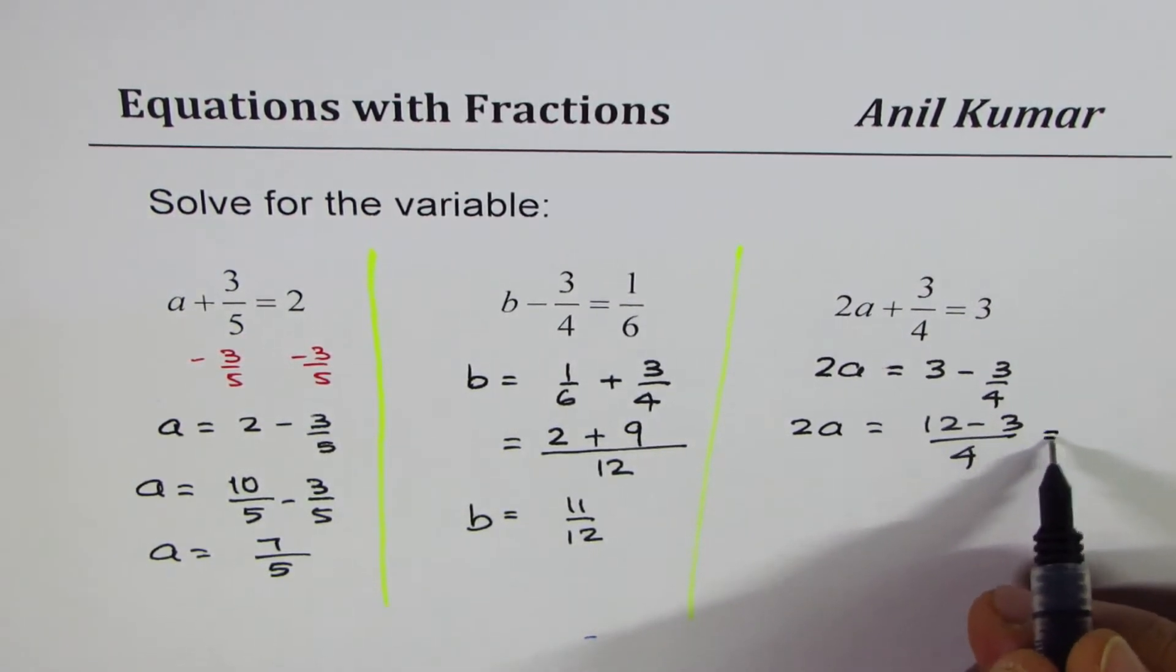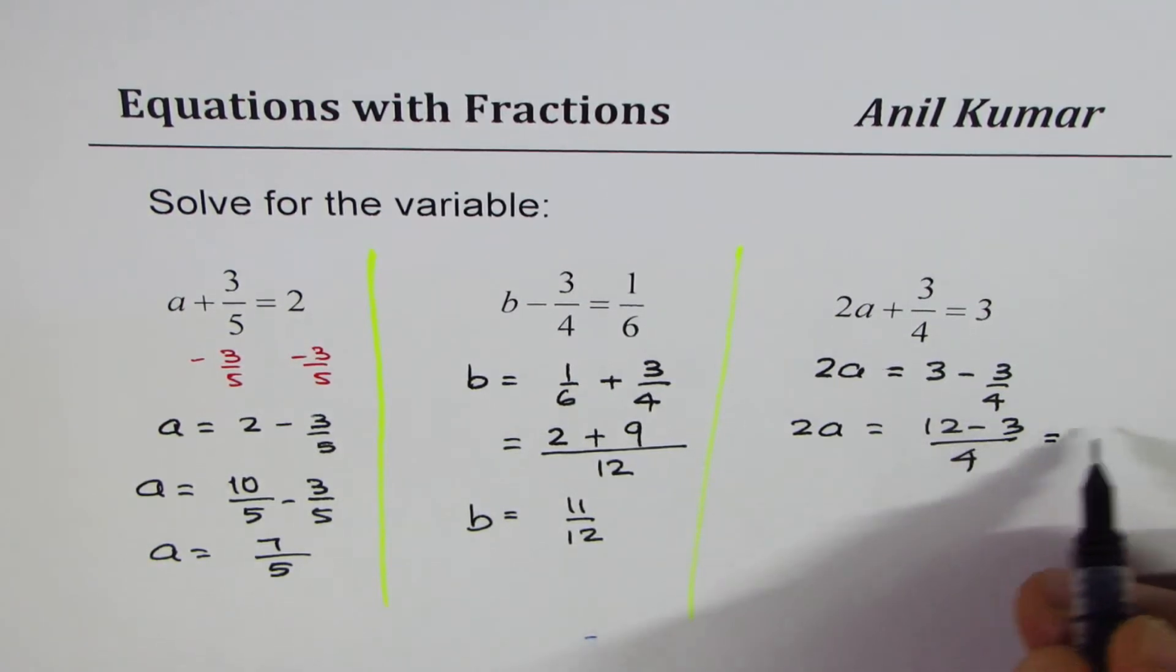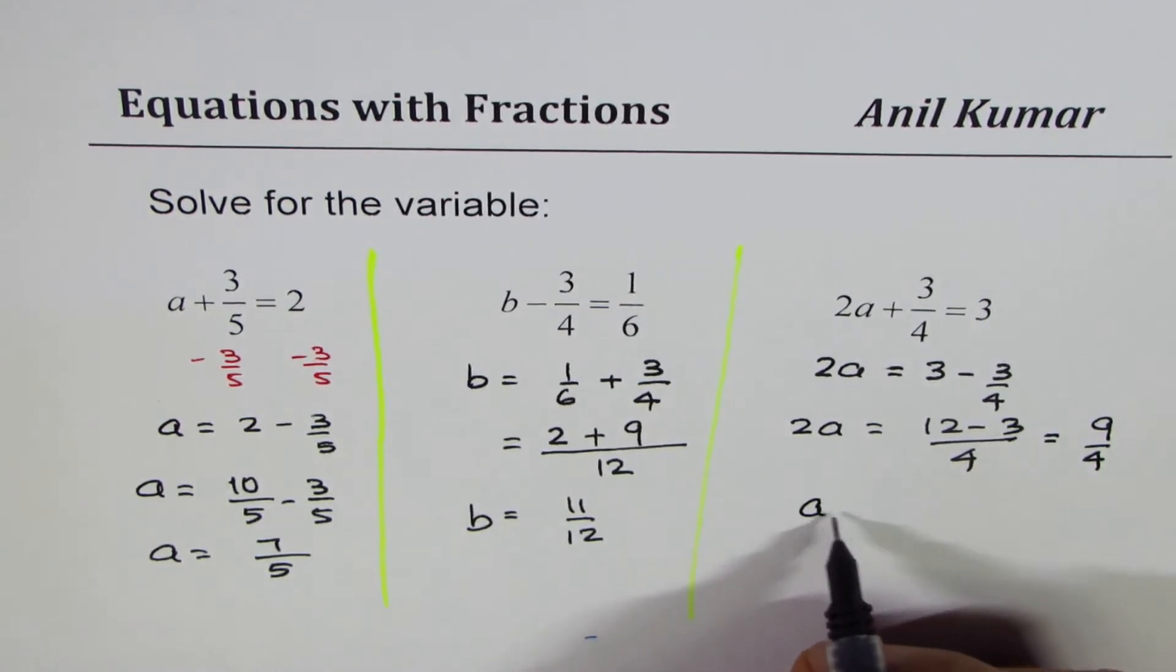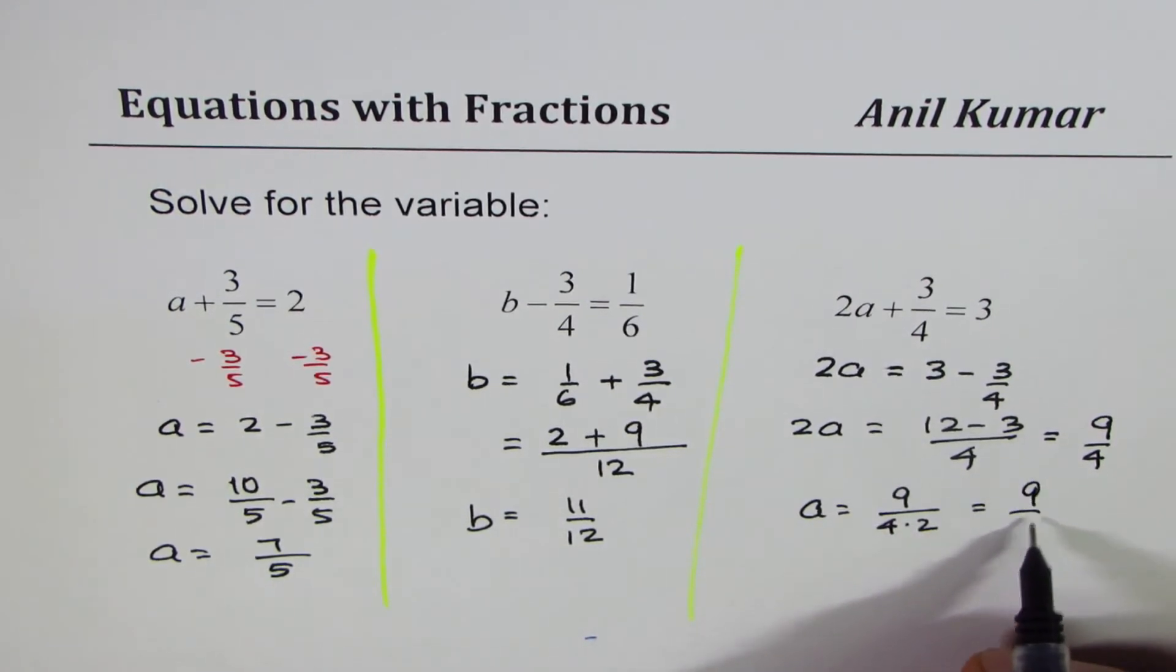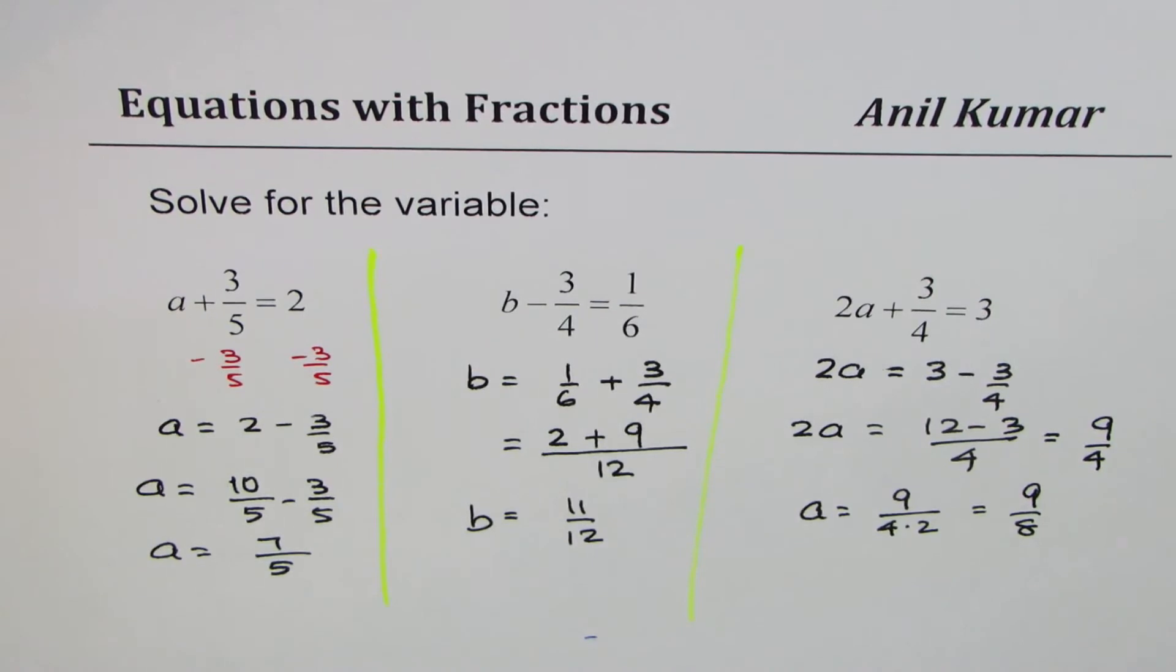Now, 12 minus 3 is 9. So we get 9 over 4. 2a is 9 over 4. What is a? So a equals 9 over 4 times 2. It gets divided. So we have 9 over 8 as the value of a. So I hope that really helps you to understand the concept.